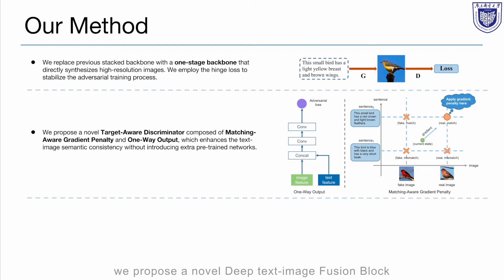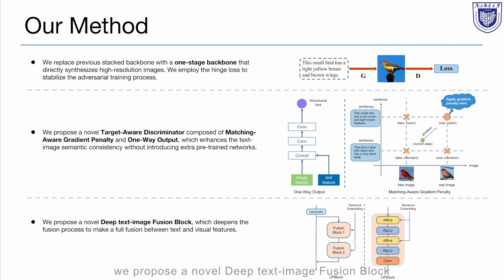Lastly, we propose a novel deep text-image fusion block to fuse text and image features. Our DF block is composed of two channel-wise affine transformations, two ReLU layers, and one convolutional layer. The text and image features are fused two times in DF block, and there are two DF blocks stacked in UP block. It enables each UP block to fuse text and image features four times.